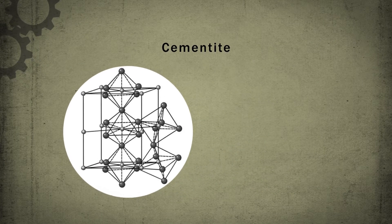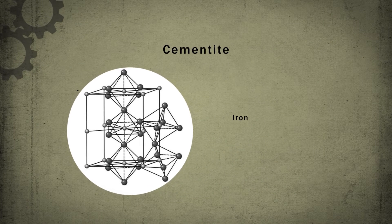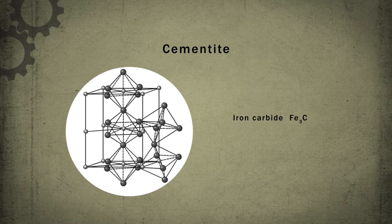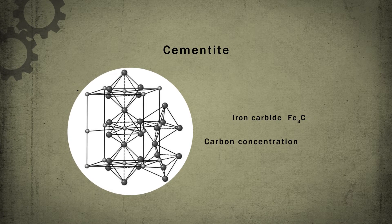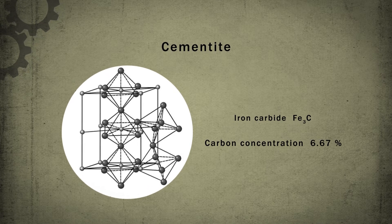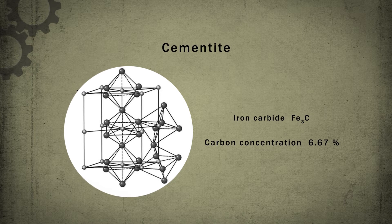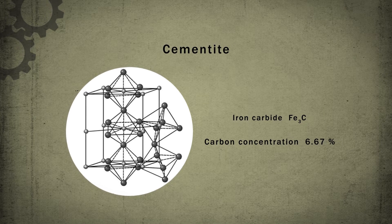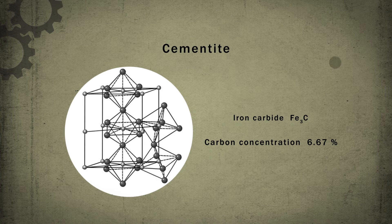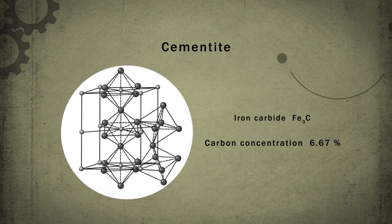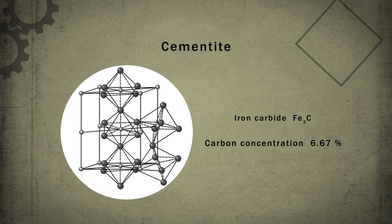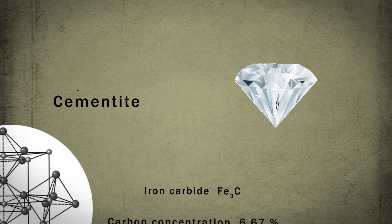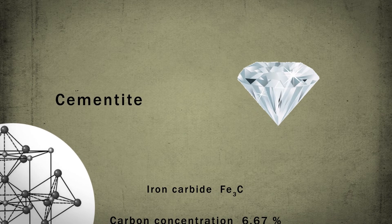Cementite, which is iron carbide with the formula Fe₃C. Carbon concentration in cementite is 6.67%. The crystal structure of iron carbide is more complex in comparison with the crystal structures of ferrite and austenite. Cementite has high hardness comparable only to diamond, but extremely low ductility.